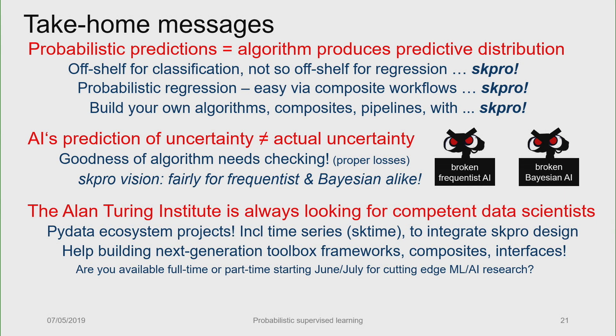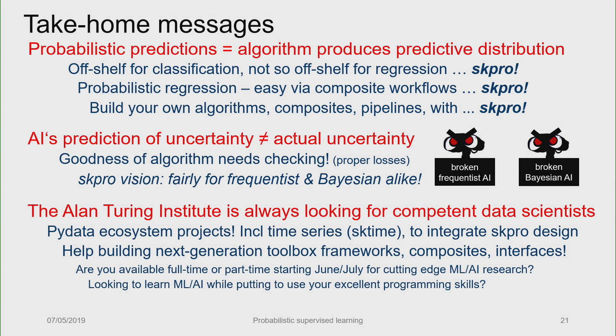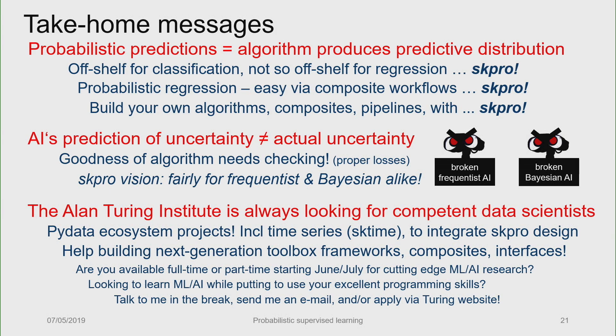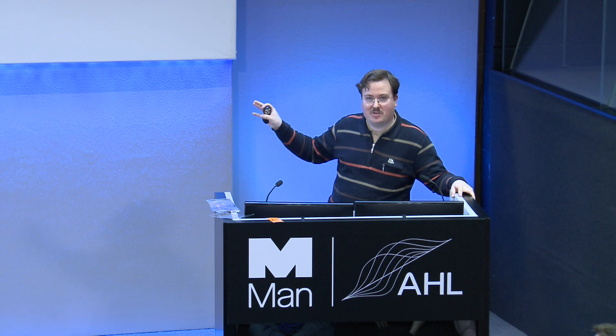So if you're available, say, full-time or part-time starting June or July for cutting-edge ML/AI research, are interested to put your excellent programming skills to use while learning on ML/AI, getting involved in applications, and broadening your skill set, talk to me in the break, send an email, or apply via the Turing website. There are certain fast-track processes affiliated with projects. Of course, there would be a proper application and review process as well. But if you're specifically interested in the Python projects, if you have a software development background and a little bit of ML experience, then this is not only an opportunity to contribute, but also an opportunity to learn. And we have coffee that flows from taps.